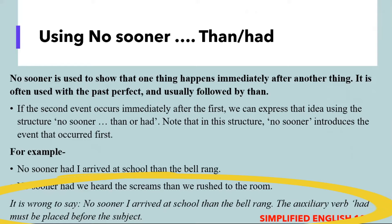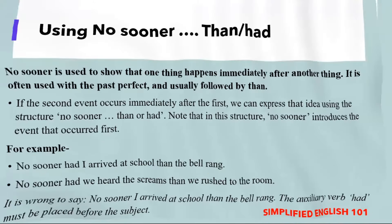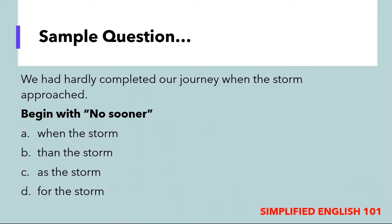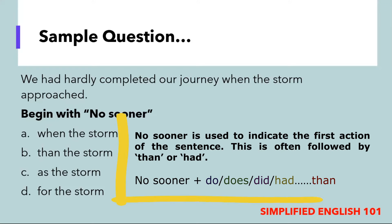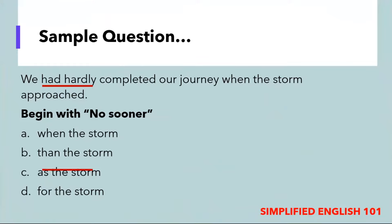Let us look at an example: 'We had hardly completed our journey when the storm approached.' You are asked to begin with the expression 'No sooner.' No sooner is used to show one thing happens immediately after another and introduces the first action. When beginning with 'No sooner,' we will only use expressions like 'than' or 'had.' The sentence should therefore read: 'No sooner had we completed our journey than the storm approached.' The option selected would be 'than the storm.'